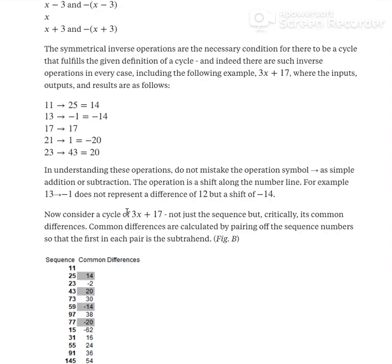Now, consider a cycle of 3x+17 as we're discussing, and not just the sequence but critically its common differences. Common differences are calculated by pairing off the sequence numbers so that the first in each pair is the subtrahend. So, 25 minus 11 is 14, 23 minus 25 is -2, and so on.